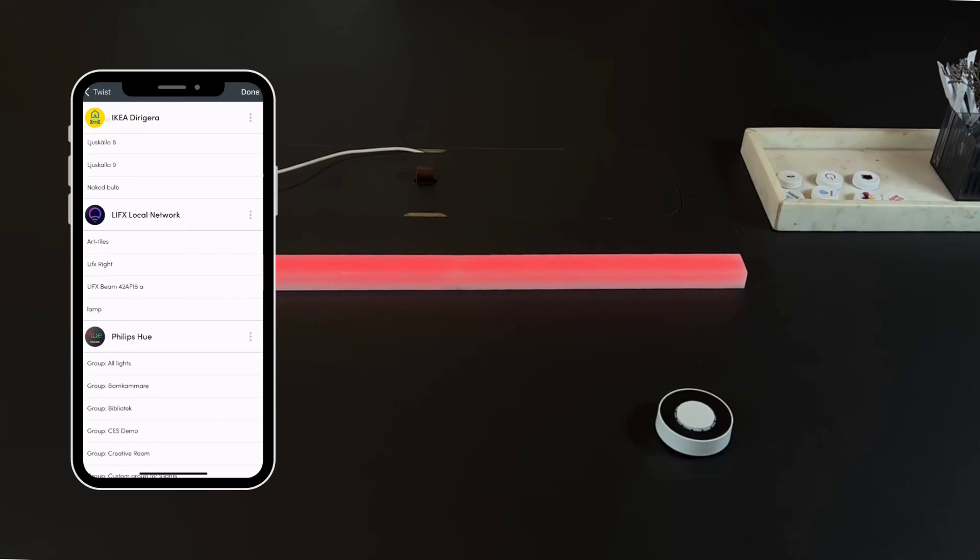Once set up, press Search for LIFX Lights and choose the one you want to control. Press Done, and you can now adjust Brightness by using the Twist function.